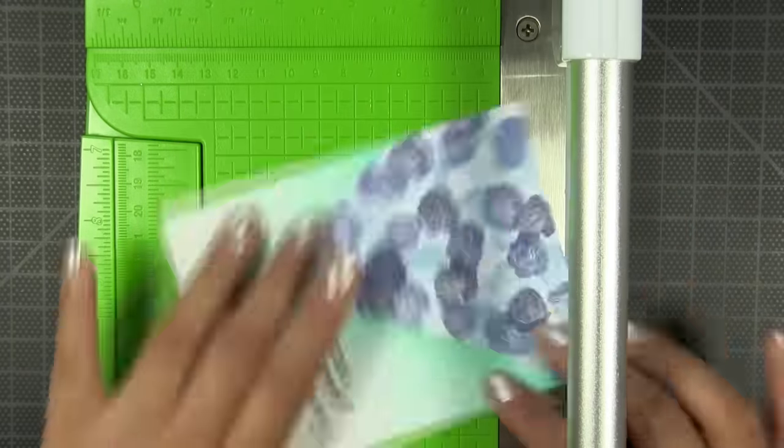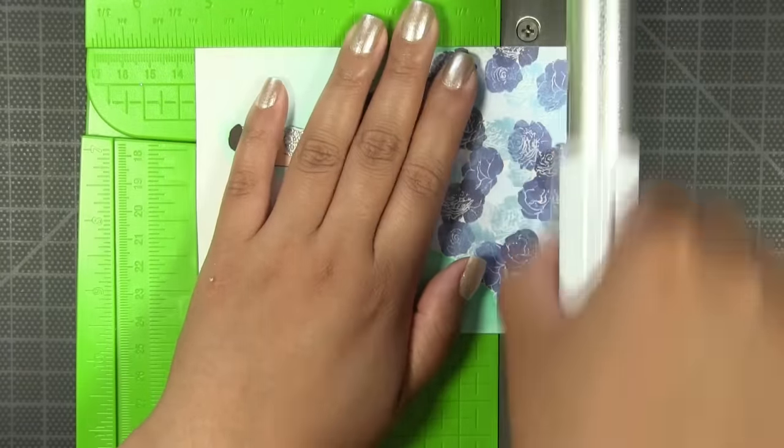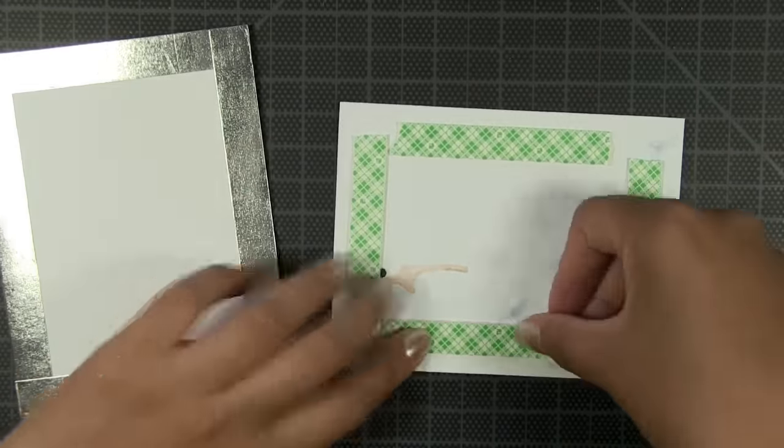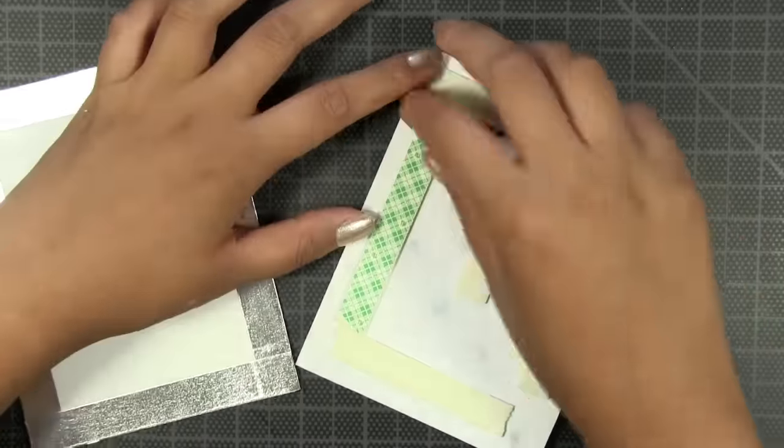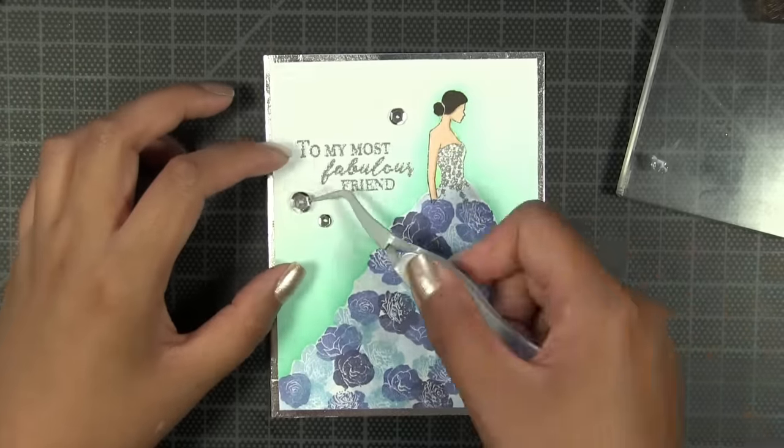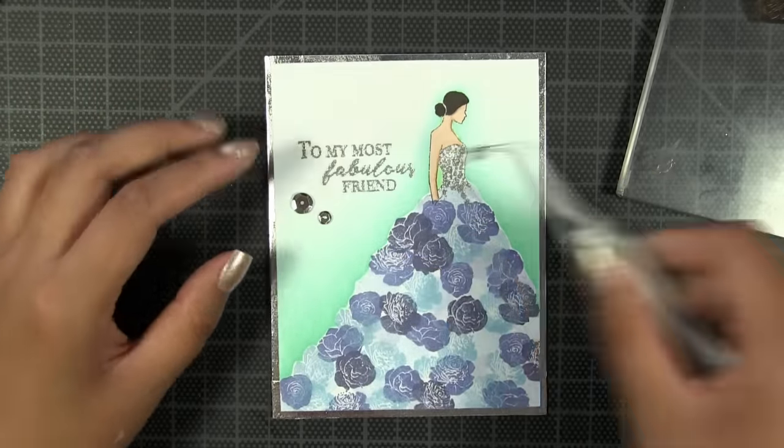Next I'm just going to take some dimensional foam tape and apply it behind my stamp panel, and I'm just going to pop this up right over our card base. For the finishing touch, I'm just adding some 8, 6, and 5 millimeter silver metallic sequins to finish off the card.